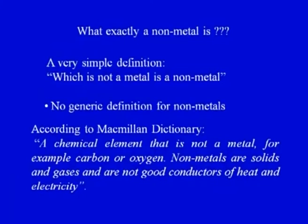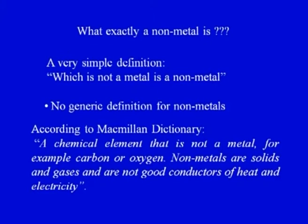Now we will see what exactly a non-metal is and try to define it. Then we will see what are the properties of metals which render them easily manufacturable, what are the different types of non-metals, what are the properties of non-metals, and finally how these properties dictate the manufacturability or processability of the non-metals. A very simple definition: a non-metal is a material which has properties not similar to those of metals. There is no single generic definition for non-metals, but because of certain properties they possess, they can be clearly identified from metals.